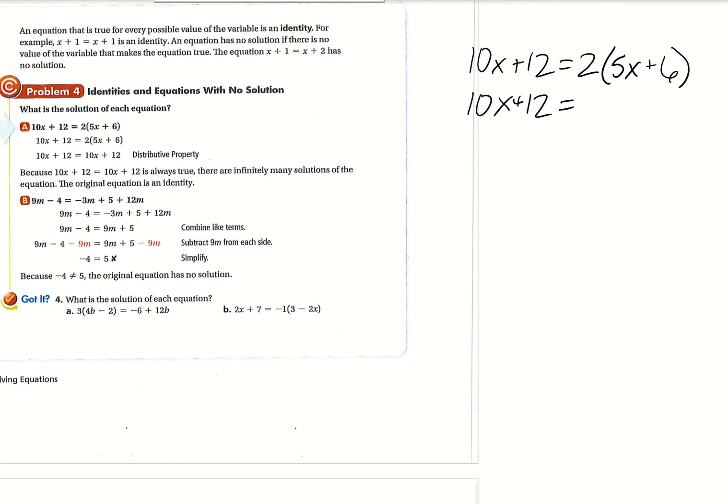All right. So if we do the distributive property here, we have two times five X, which is 10X and then two times six, which is positive 12. All right. Now we're left with the same thing on both sides. Okay. Whenever you're left with the same thing on both sides, you know that anything for X will make this true.